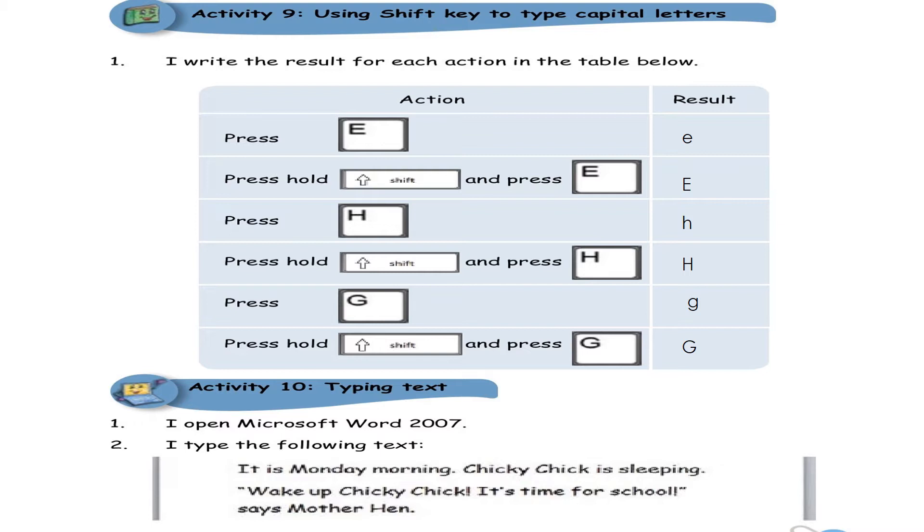So, we learned that the two functions of shift key are to make capital letters and to display different symbols on the screen. Yes or no? I hope you have typed this little text in Microsoft Word. It is Monday morning and you have written it correctly. You made the capital letter nicely. It's easy, just ask for help of your mother to work with the shift key.